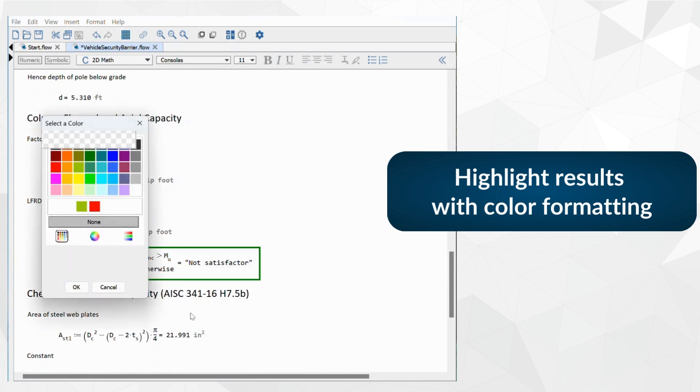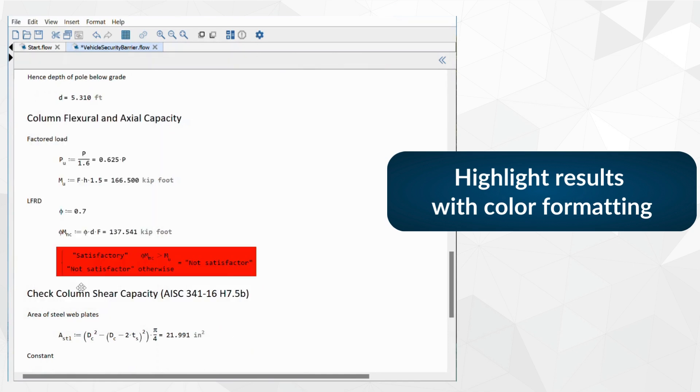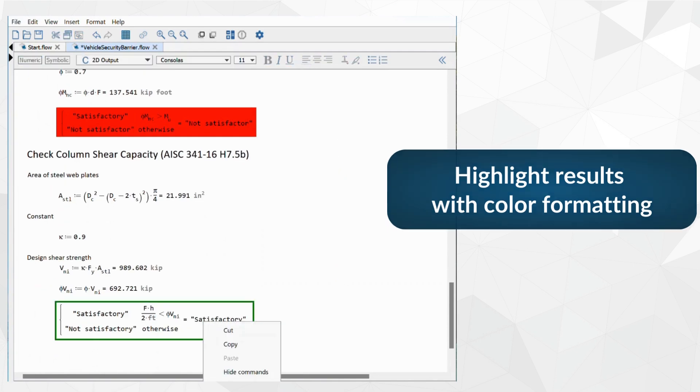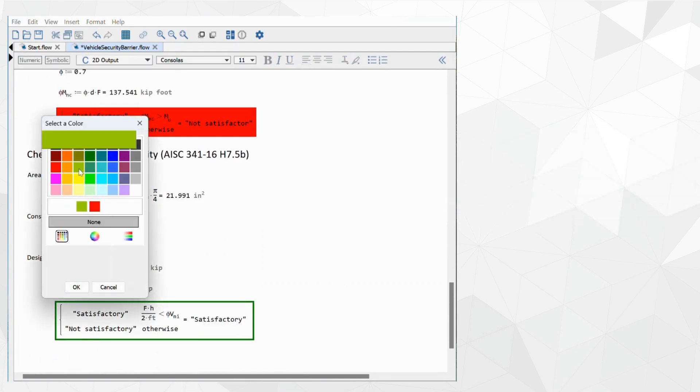To display findings clearly, use piecewise expressions to represent pass and fail checks against the design constraints. These can be color-coded so they're more visible to reviewers and approvers.